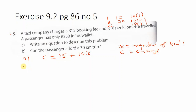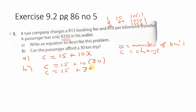Part B: can the passenger afford a 30-kilometer trip with only 250 rand? We replace x with 30: the charge equals 15 plus 10 times 30, which is 15 plus 300, so the charge is 315 rand. Since the passenger only has 250 rand in the wallet and the trip costs 315 rand, the passenger does not have enough money — the answer is no.